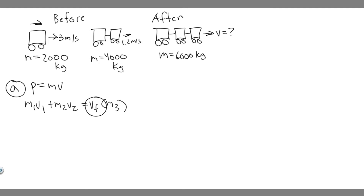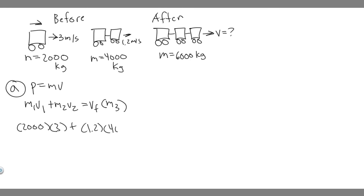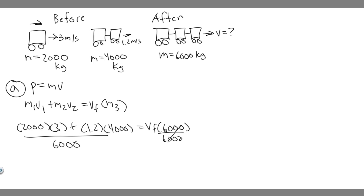So basically, what we're going to do is solve for v_final. We know all the variables, so we just plug in. m₁ is 2,000 multiplied by v₁ which is 3, plus m₂ which is 4,000 multiplied by v₂ which is 1.2, equals v_final multiplied by the combined mass of the three cars, which is 6,000. If we divide by 6,000: (2,000×3) + (1.2×4,000) divided by 6,000 gives v_final = 1.8 meters per second.